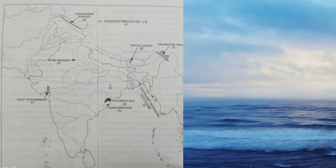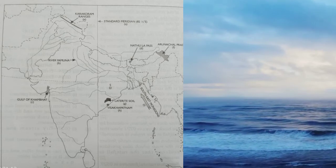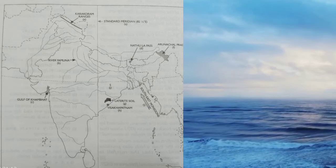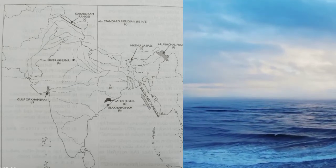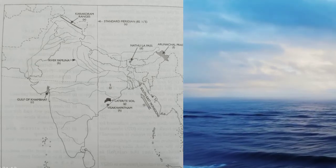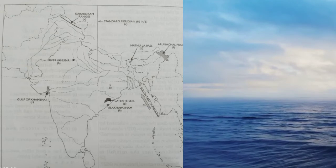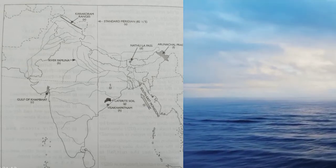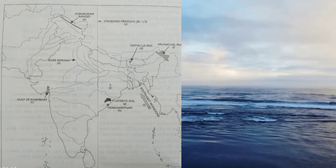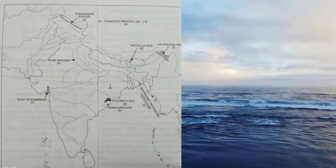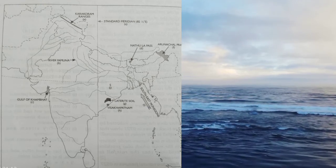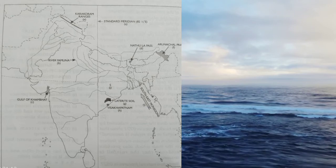Next map on the outline map of India: 'A' — draw and name the Standard Meridian — 82.5 degrees East. 'B' — label the river Yamuna. 'C' — mark and name the Gulf of Khambhat. 'D' — mark and name the Nathu La Pass. 'E' — mark and name the Karakoram Range.